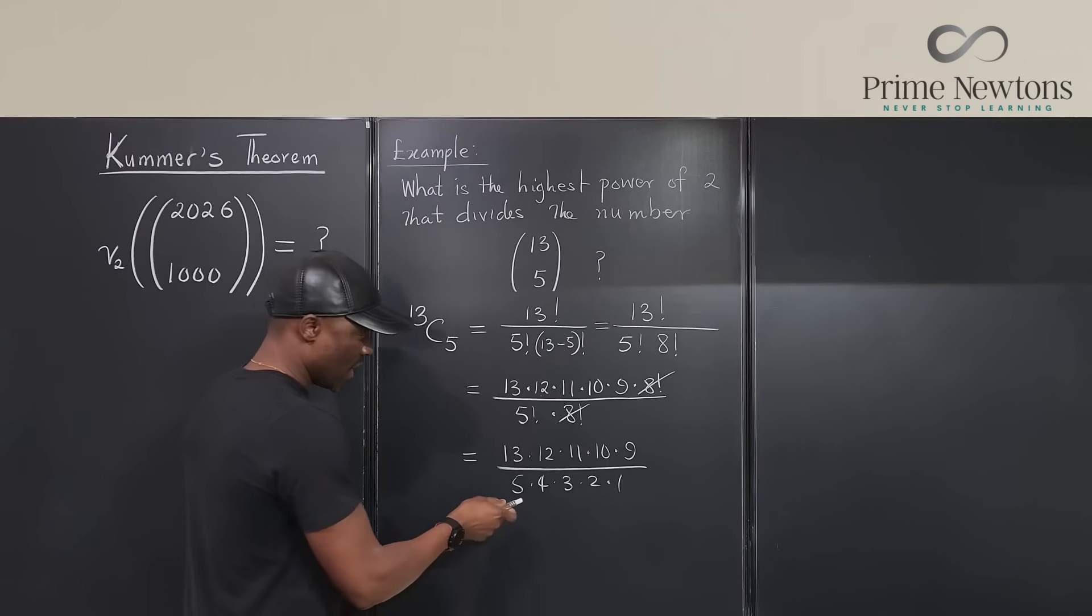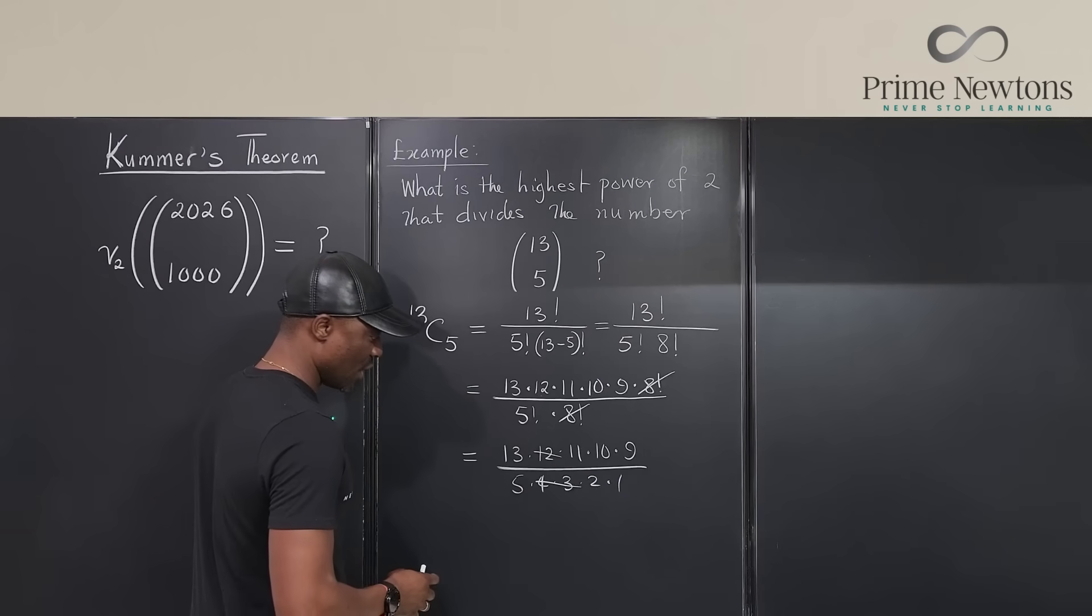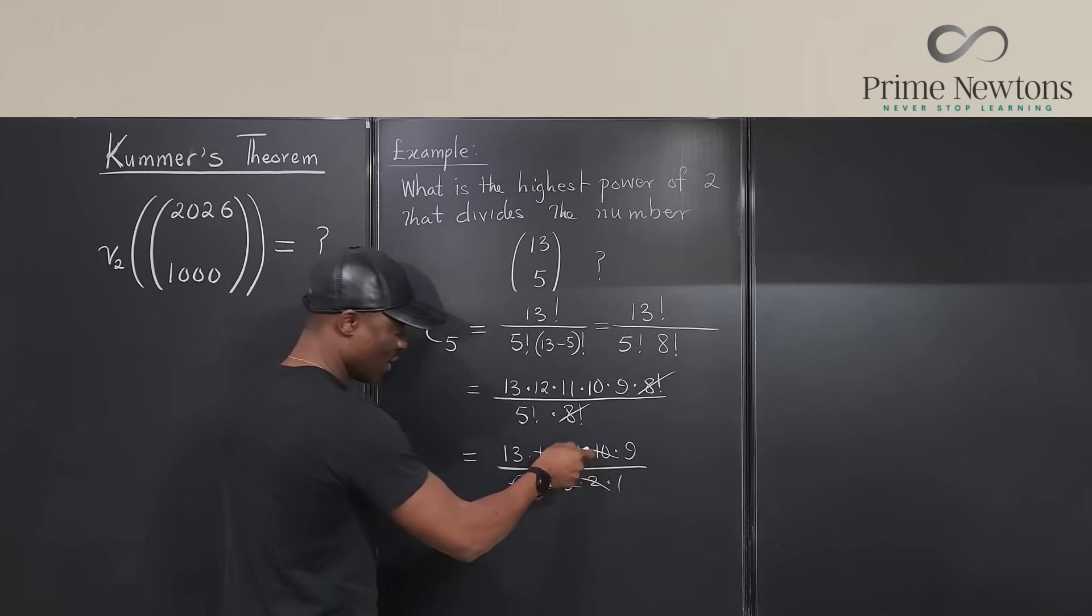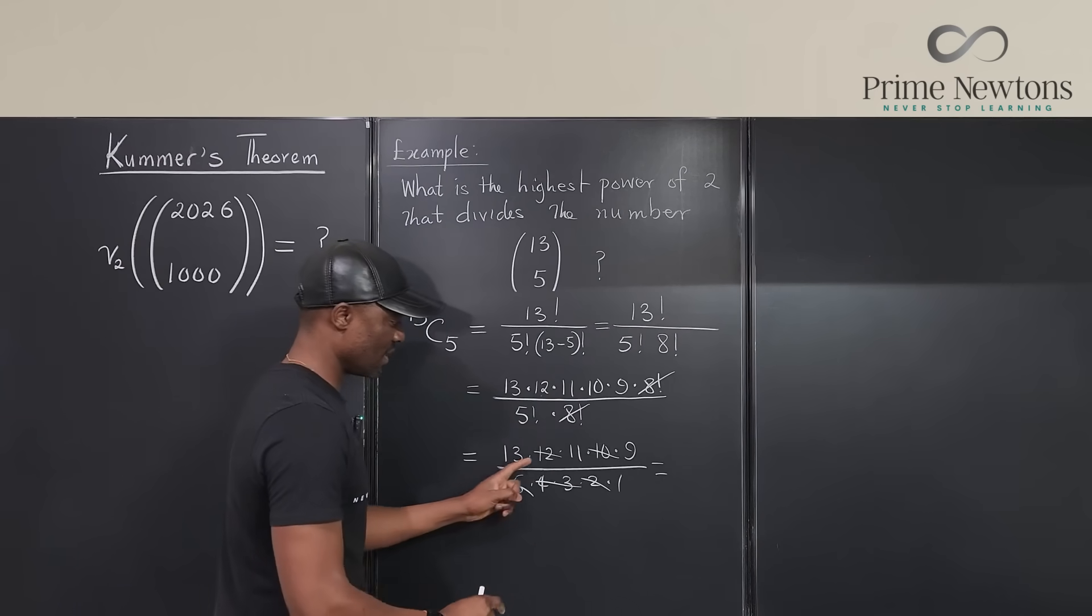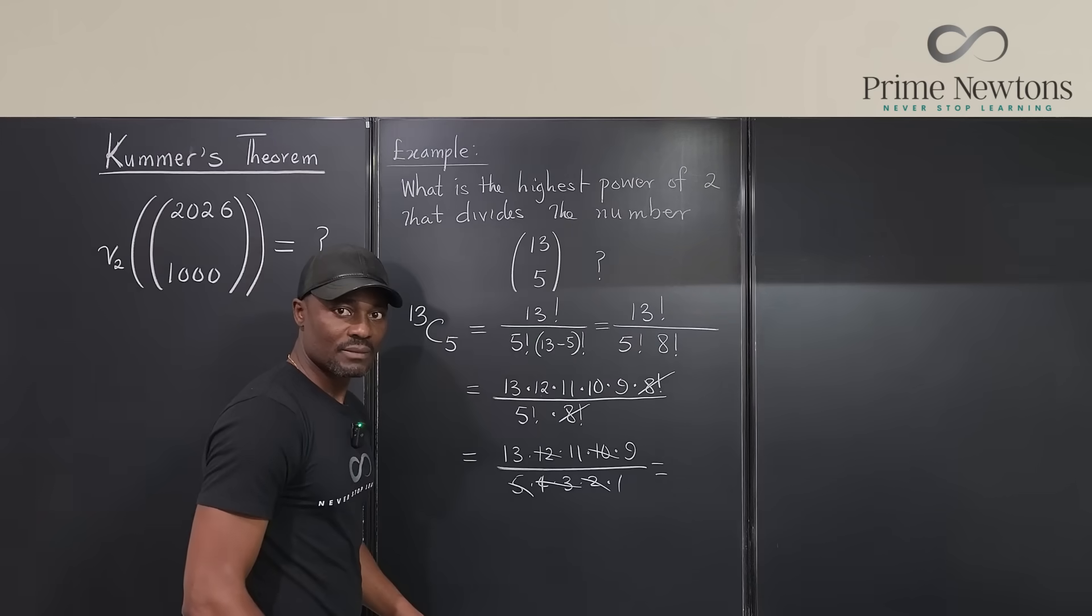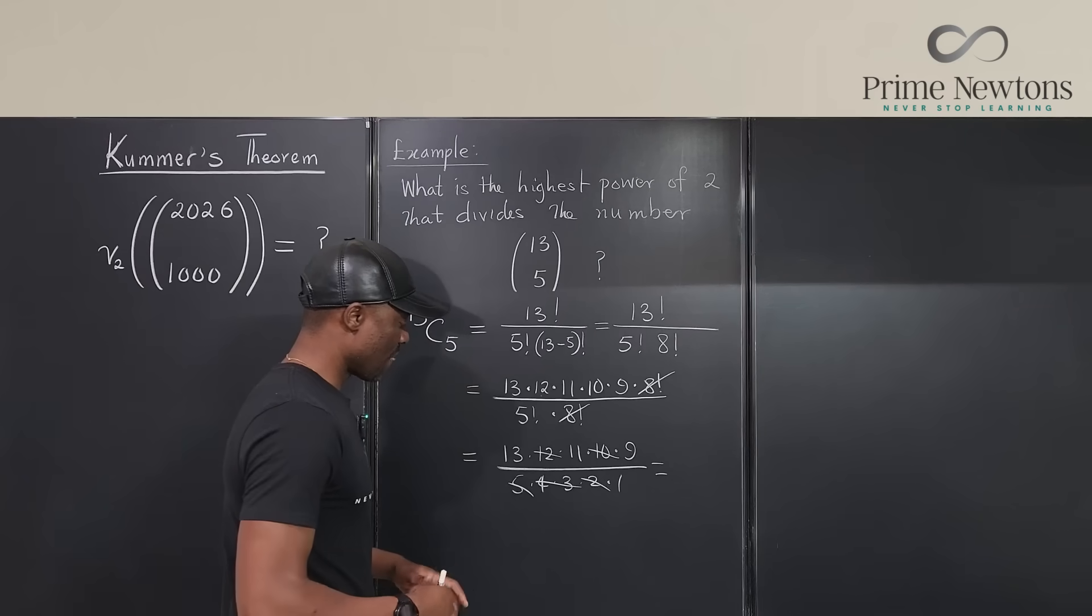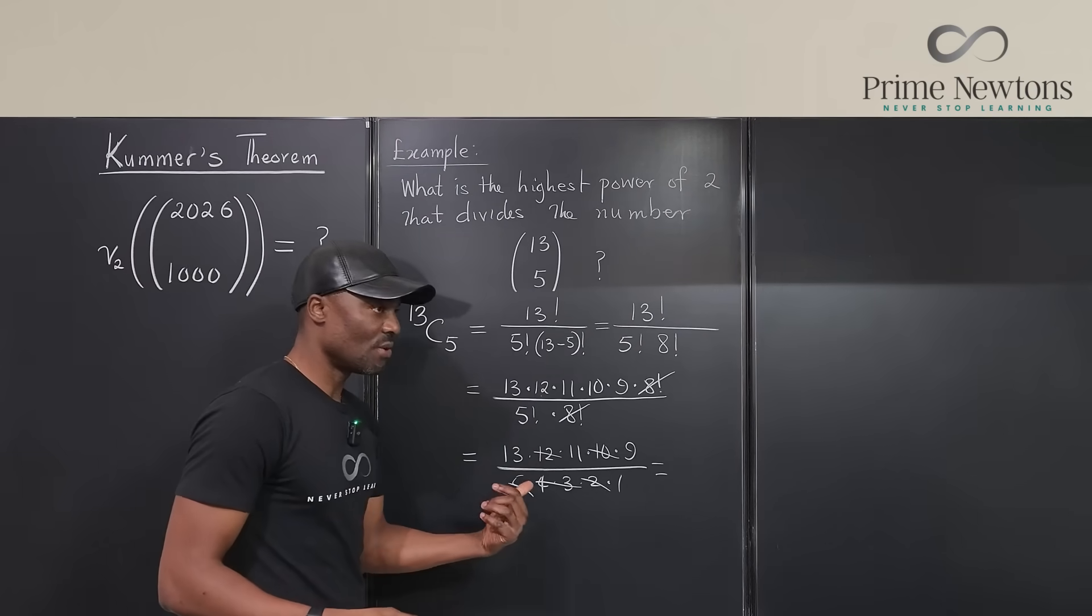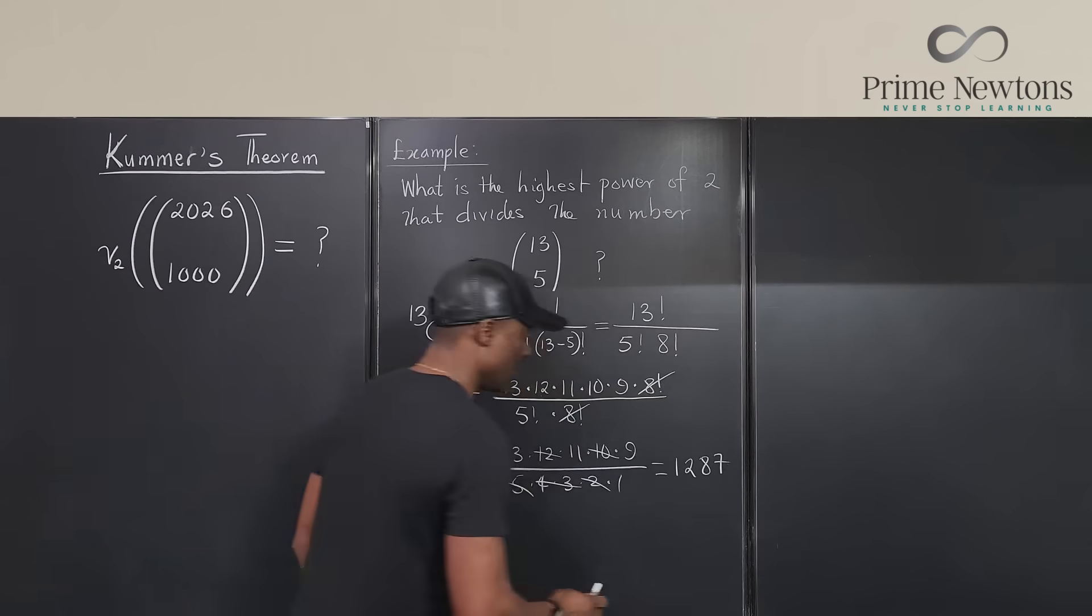So what we're left with will just be this. Let's see if we can work this out. 13 times 12 times 11 times 10 times 9 divided by 5 factorial will be 5 times 4 times 3 times 2 times 1. Now we know that 5 times 2 is 10. 4 times 3 takes out 12. Nice. And I know that 5 times 2 will take out 10. So this goes away. So what we have left is just 13 times 11 times 9. And looking at what we have, we know that the number is purely odd. So this is going to be 99 times 13, which is 100 times 13, that's 1,300 minus 13, that's 1,287. So 1,287 is this number.